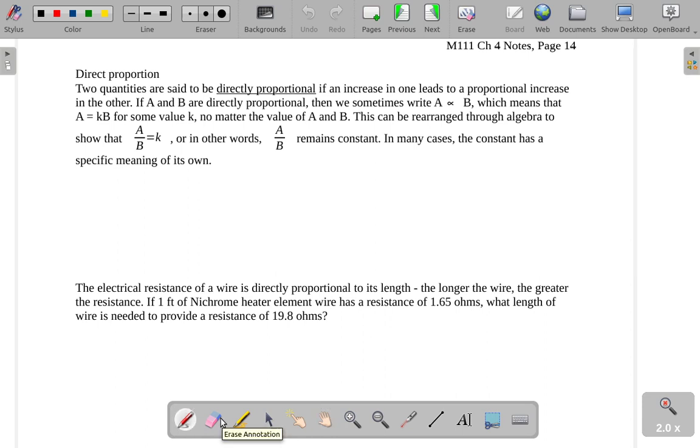Two numbers are said to be directly proportional when an increase in one leads to a proportional increase in the other. What I mean by that is, let's say we have two numbers, we'll go 2 and 4.